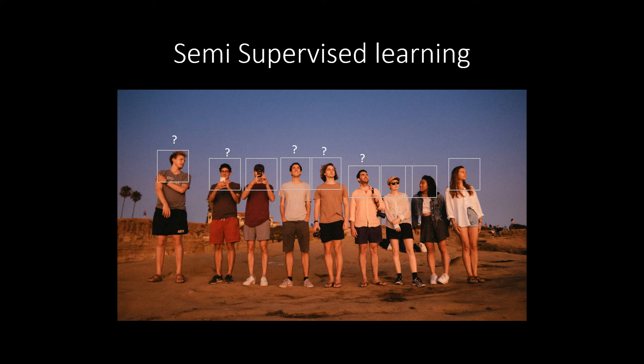For example, when we upload our group photo on social media sites, it groups different faces on its own but needs your input to label them. In this way, we can consider it a combination of supervised and unsupervised learning.